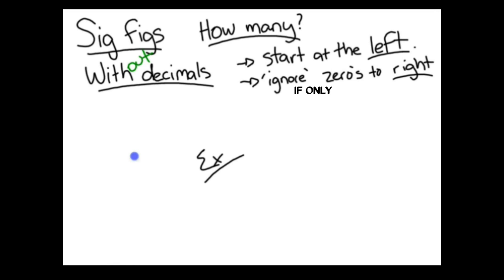For example, 180,700. You start at the left with the 1, 1, 2, 3, 4, and you ignore the zeros to the right. Therefore, it has 4 sig figs.